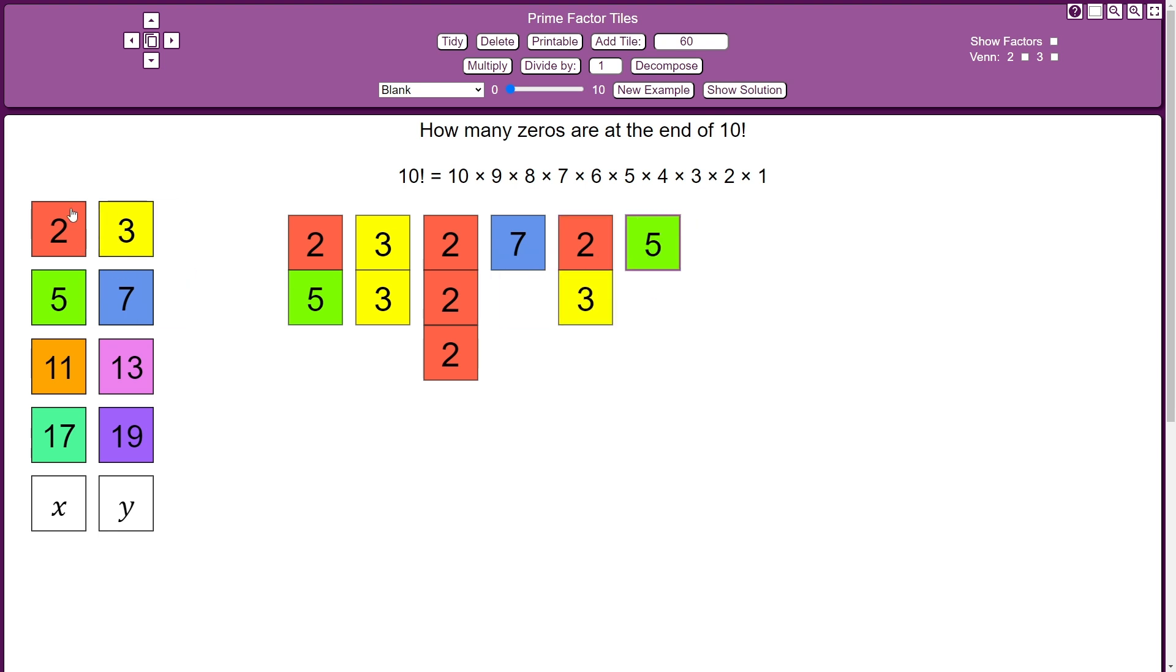6 is 2 times 3. 5 is another prime. 4 is 2 times 2. And then 3 and 2 are both prime. And I don't need to worry about the 1 because when I multiply by 1, I'm not going to change the value of the product.